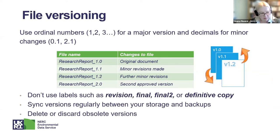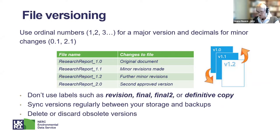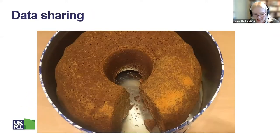Part of data storage is your file versioning strategy. Use ordinal numbers for major versions and decimals for minor changes — so 1.0 is the original published version, 1.2 has had some revisions, and 2.0 is the second approved version. Never use labels such as 'revision', 'final', 'final final', or 'definitive copy', because next year you will not remember what those meant. Remember to sync your versions across different storage locations, and discard any obsolete versions that are no longer necessary.